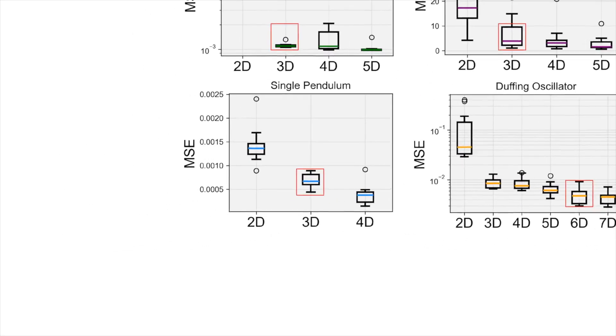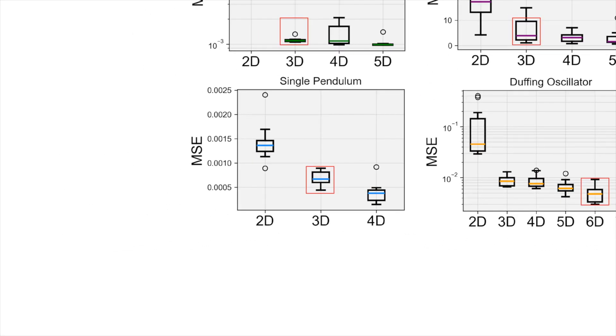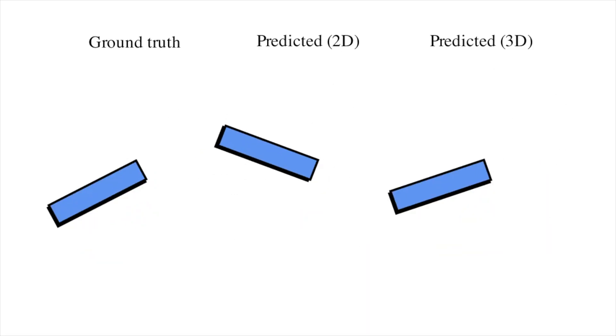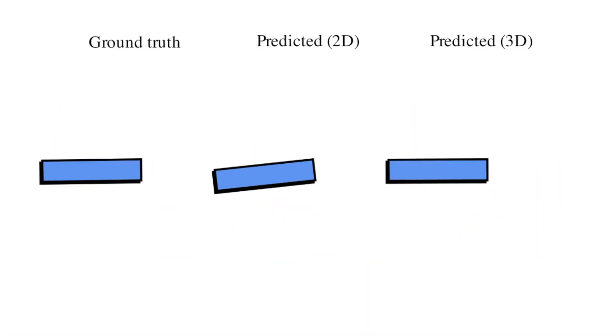We first tested our method on the single pendulum, and we observed that the loss was exceptionally low by simply adding one dimension, making the linear model 3D. This model achieved very accurate long horizon predictions even when starting at large amplitudes.